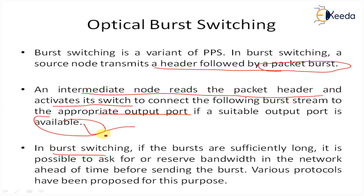In burst switching, if bursts are sufficiently long, it is possible to reserve bandwidth in the network ahead of time before sending the burst. Various protocols have been proposed for this purpose. One example is JET — Just Enough Time. In this workflow, the source node waiting to send a burst first sends a header on the control channel, alerting nodes along the path that the burst will follow. It then transmits the burst after a certain time period, large enough to give nodes sufficient time to process the header and set the switch, so that additional buffering is not needed at the node.